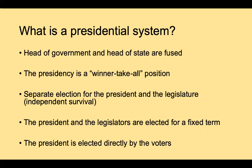A presidential system is one where the head of government and the head of state are fused, where the presidency is a winner-take-all position and they are independently elected based on votes. There's a separate election for the president and the legislature, and they survive independently of each other — they don't depend on each other to exist. The president does not come from the legislature, and both the president and legislators are elected for a fixed term.